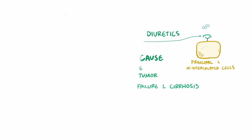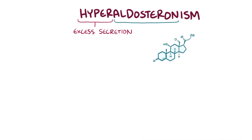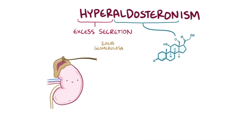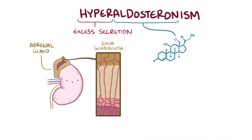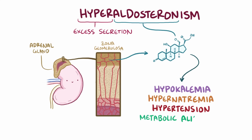As a quick recap, hyperaldosteronism is the chronic excess secretion of aldosterone from the zona glomerulosa cells of the adrenal gland, and these high aldosterone levels can lead to hypokalemia, hypernatremia, hypertension, and metabolic alkalosis.